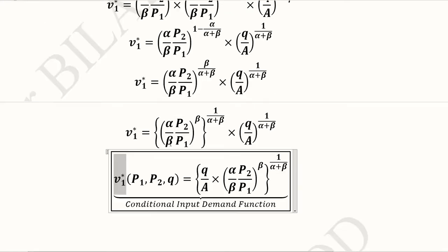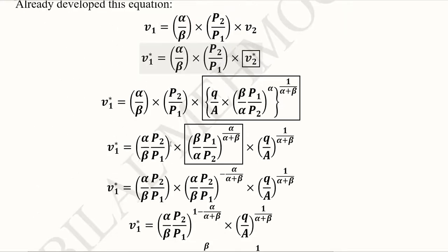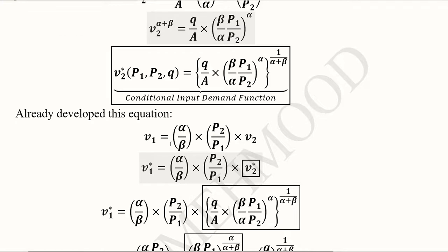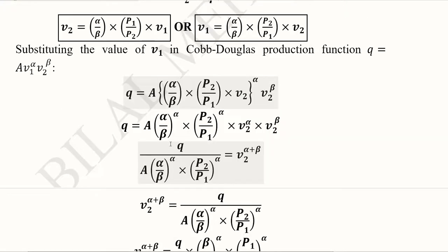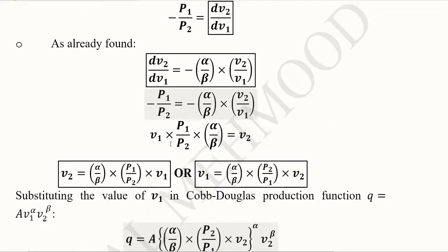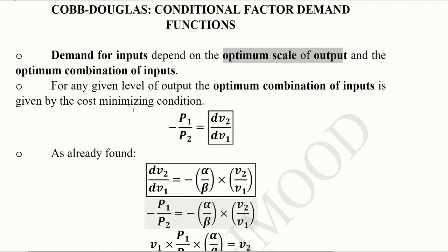This is how we develop the conditional input demand functions for the Cobb-Douglas production function. The process is based on optimization, where the optimal scale of output and optimum combination of inputs are present.